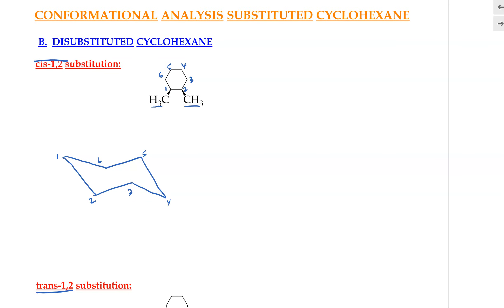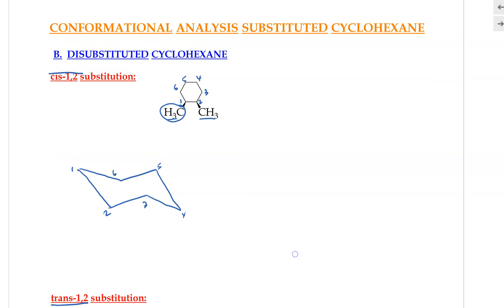For carbon number 1, the cis methyl group is pointing up, so we go to carbon 1 and put the methyl up at the axial location. The hydrogen points to the equatorial position. Moving on to carbon number 2, the methyl group is also pointing up. For position number 2, the up position will be the equatorial position. That means the hydrogen will then be pointing down.